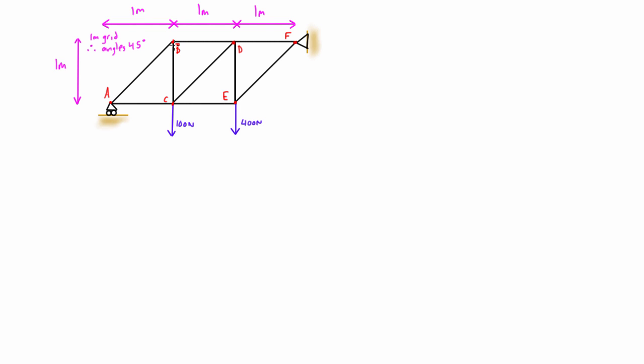You'll notice that the horizontal and vertical bars are all one meter long, and then the diagonal bars will actually be a little bit longer. We don't actually need to know how long they are because based on this grid pattern, all these angles are going to be 45 degrees and these ones will be 90 degrees, so we'll just be able to roll with those 45-degree angles.